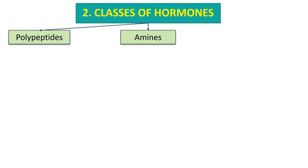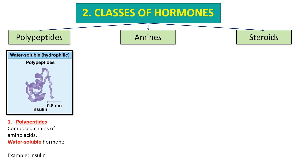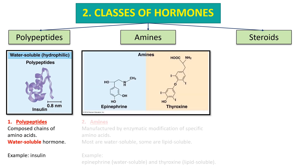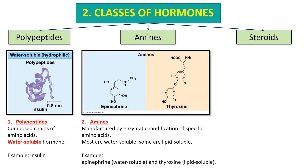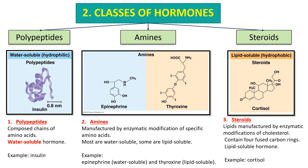Now let's look at classes of hormones. Hormones fall into three major classes: polypeptide, amines, and steroid. Polypeptides are composed of chains of amino acids and are water-soluble hormones — an example is insulin. Amines are hormones manufactured by enzymatic modifications of specific amino acids; most are water-soluble and some are lipid-soluble. An example of a water-soluble amine hormone is epinephrine, and a lipid-soluble amine is thyroxine. The third class is steroids — a type of lipid manufactured by enzymatic modifications of cholesterol, containing four fused carbon rings. It is a lipid-soluble hormone; an example is cortisol.